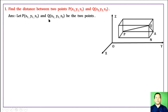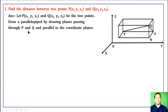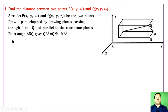Let P and Q be two points. Draw a parallelepiped by drawing planes passing through P and Q and parallel to the coordinate planes, forming right triangle ANQ.